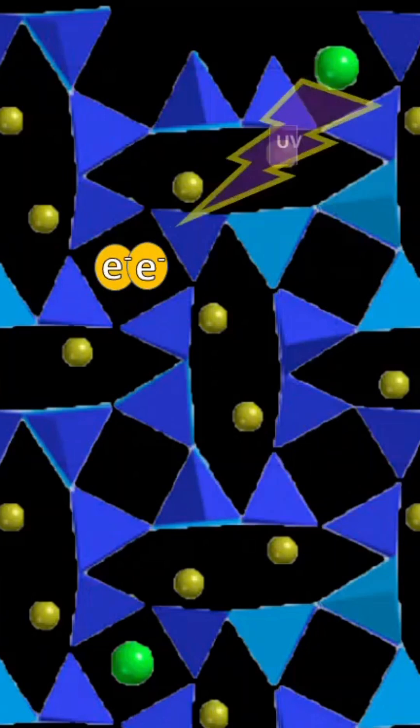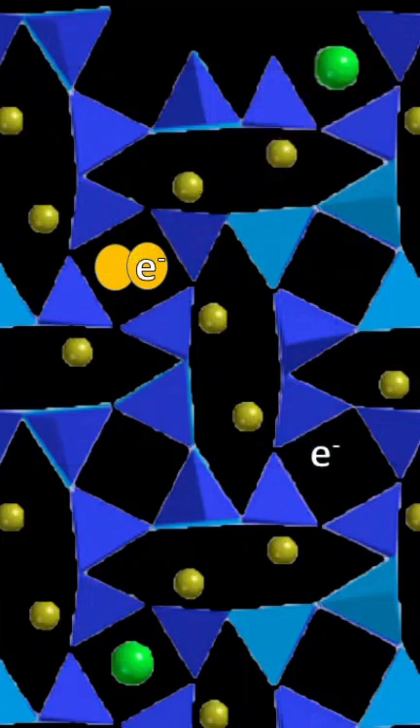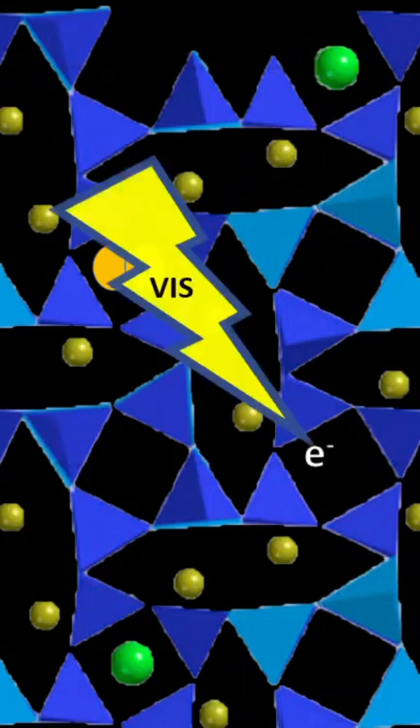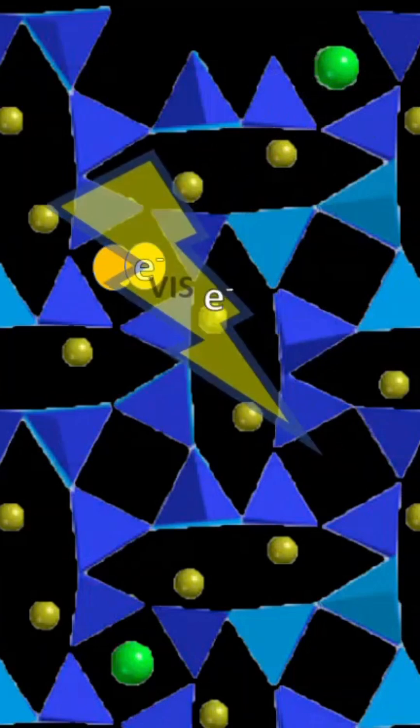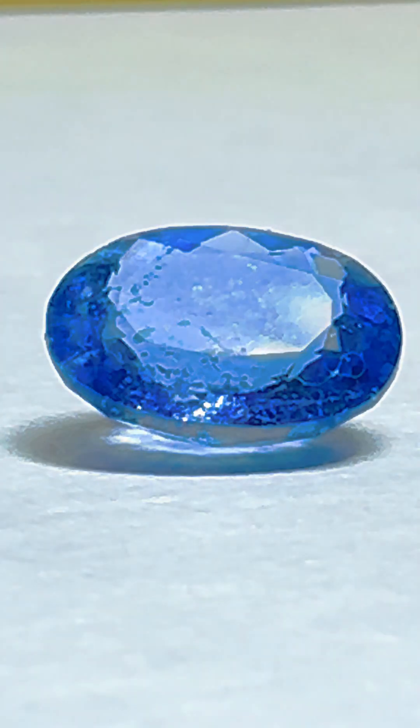Shining UV light on the crystal causes an electron to dislodge from the disulfide ion and migrate to the chloride ion vacancy. These trapped electrons are what give the crystal its blue color. The blue color doesn't last because visible light that strikes the electron sends it back to the original disulfide ion, causing the blue color to fade.